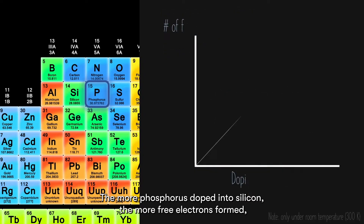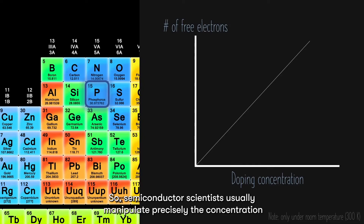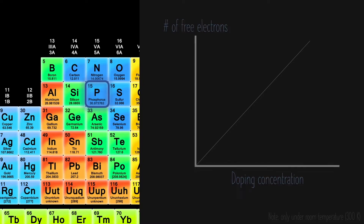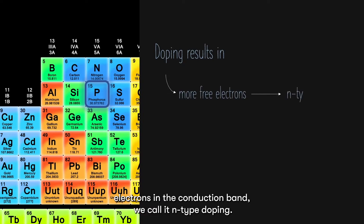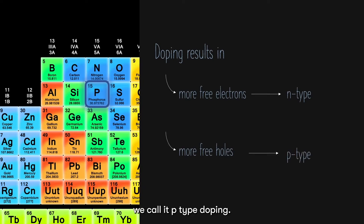The more phosphorus doped into silicon, the more free electrons form, since one phosphorus atom will result in one free electron. Semiconductor scientists usually manipulate precisely the concentration of phosphorus to control the amount of free electrons in the conduction band. If doping results in more free electrons in the conduction band, we call it n-type doping, and the semiconductor will then be an n-type semiconductor.